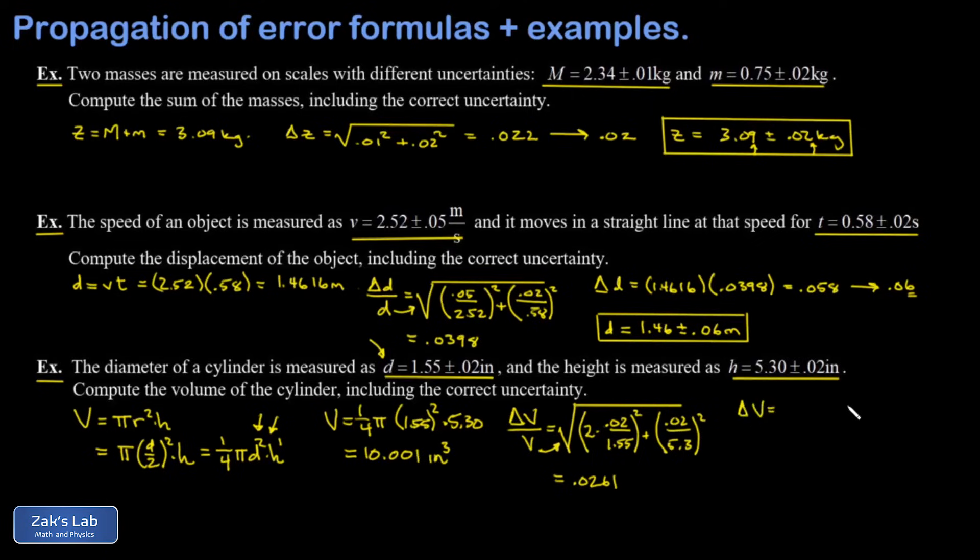So delta V is going to be V, which was basically 10, 10.001, times 0.0261, and this gives me 0.261. And again, our convention here is to round uncertainties to one significant digit, so I'm going to call that 0.3.